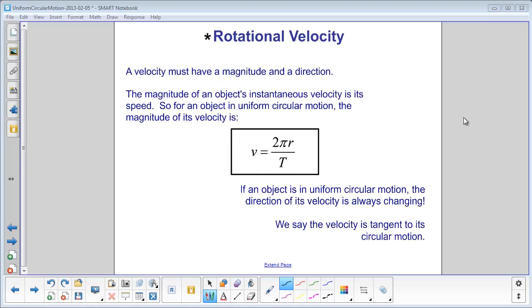Remember that velocity is a vector, which means that it has both a magnitude and a direction. The magnitude is given by the equation 2πr over T. But what's the direction?